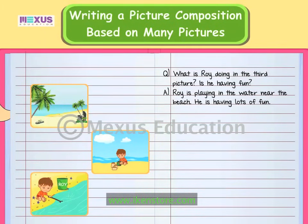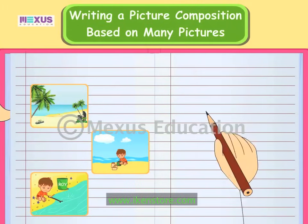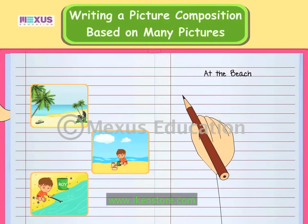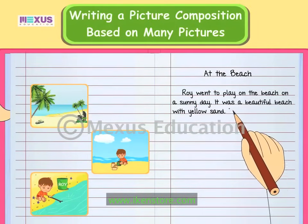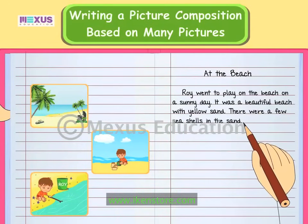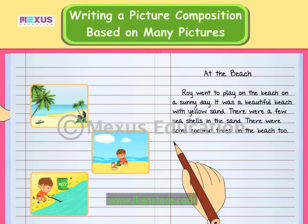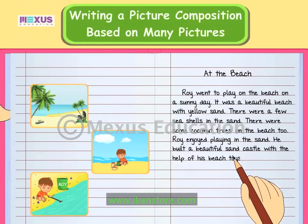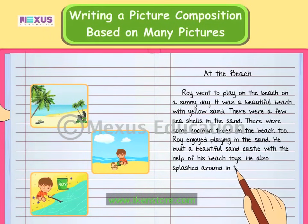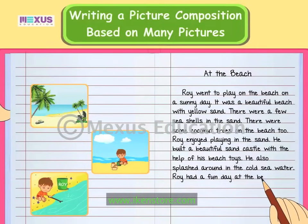With the information that we have, let us write a paragraph like a story on the three pictures. Remember to write the composition or story in the past tense only. We must begin with the main title: At the Beach. Roy went to play on the beach on a sunny day. It was a beautiful beach with yellow sand. There were a few seashells in the sand, and some coconut trees on the beach too. Roy enjoyed playing in the sand. He built a beautiful sand castle with the help of his beach toys. He also splashed around in the cold sea water. Roy had a fun day at the beach.